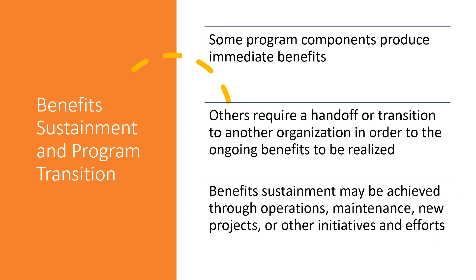Now let us understand the benefit sustainment and program transition activity. Some program components may produce immediate benefits, but others require a handoff or transition to another organization or another program in order for ongoing benefits to be realized. Benefit sustainment may be achieved through operations, maintenance, new projects, or other initiatives. There are multiple ways to sustain benefits — you can close the component after benefit realization, and all of these are part of program integration management as well.